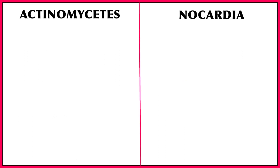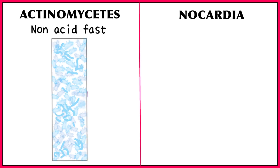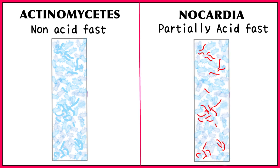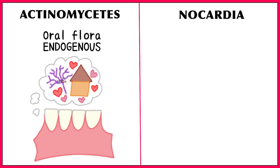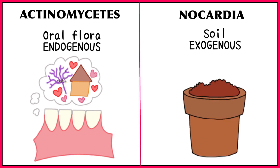On ZN staining, Actinomyces is non-acid fast, that means you can only see blue. Nocardia is partially acid fast and you can see some red organisms among the blue. Actinomyces is a commensal in our oral cavity, that's why infection is always endogenous or from the inside. Nocardia is found in soil, that is why source of infection is always from outside or exogenous.